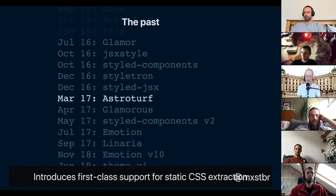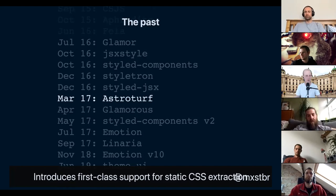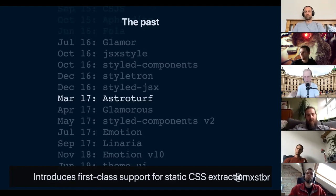In March of 2017, AstroTurf introduced first-class support for static CSS extraction — you write your CSS in JavaScript but it extracts to a static CSS file at build time. That was completely unexpected and nobody had really considered it before, but it turns out it has nice properties. If you're building apps across multiple frameworks or have a design system used in React and other frameworks, this lets you distribute the CSS file more widely. AstroTurf as a library is still being maintained and lots of people use it.